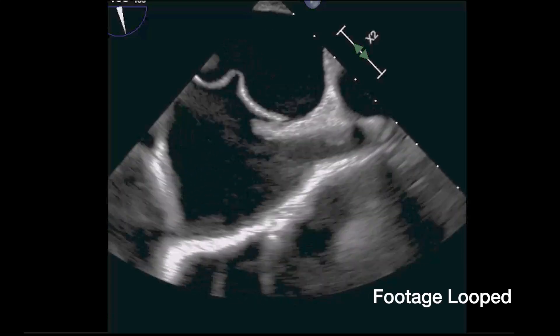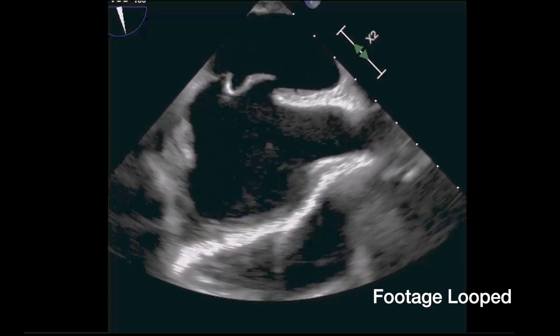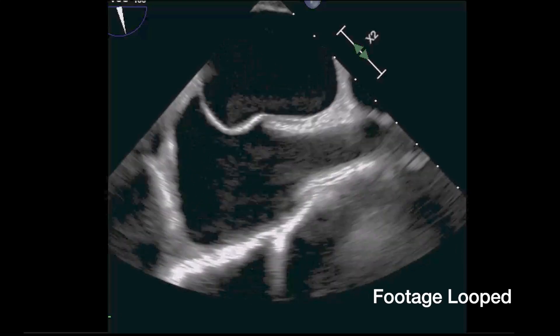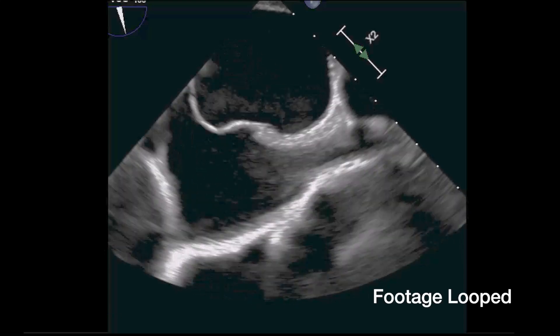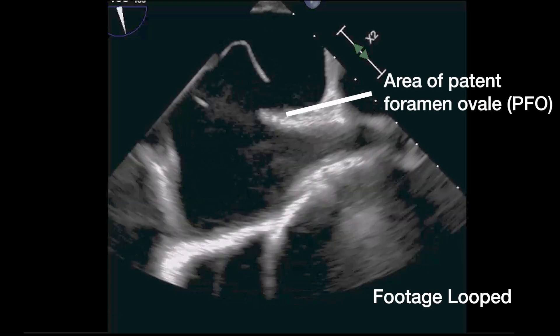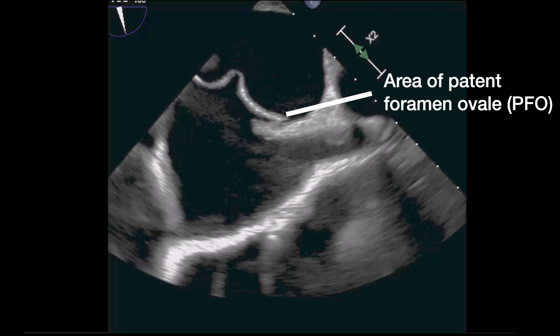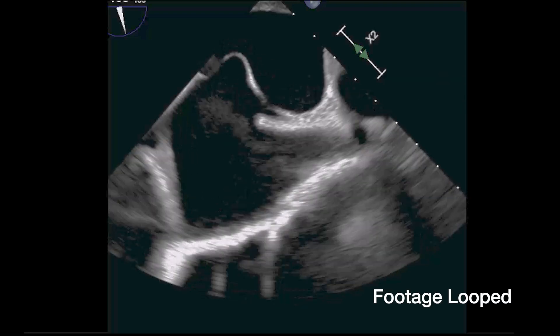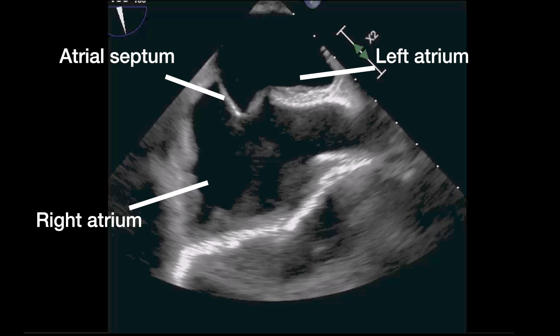Here, we show a transesophageal echocardiogram with agitated saline detecting a patent foramen ovale, or PFO, which is an opening caused by incomplete fusion of the atrial septum. Labels show the right atrium, the left atrium, and the atrial septum that separates the two chambers.